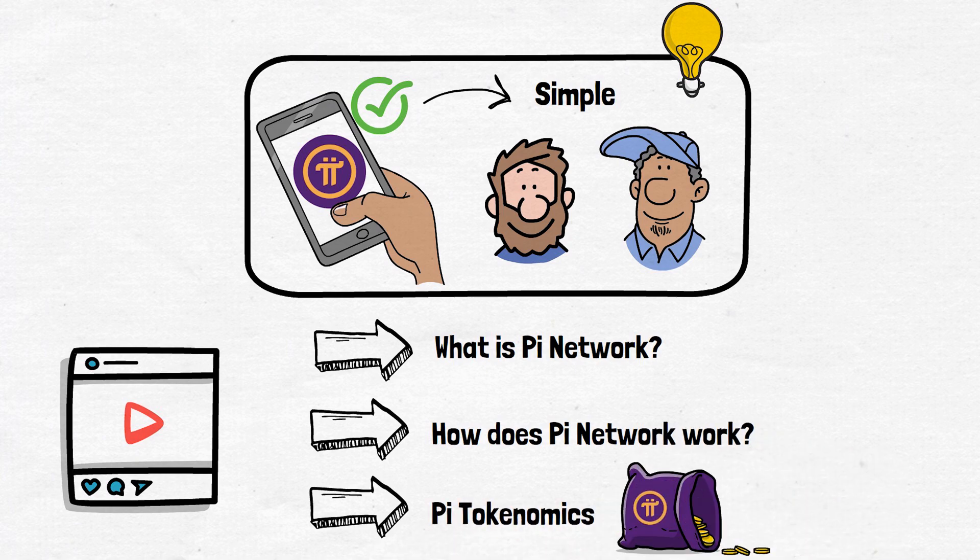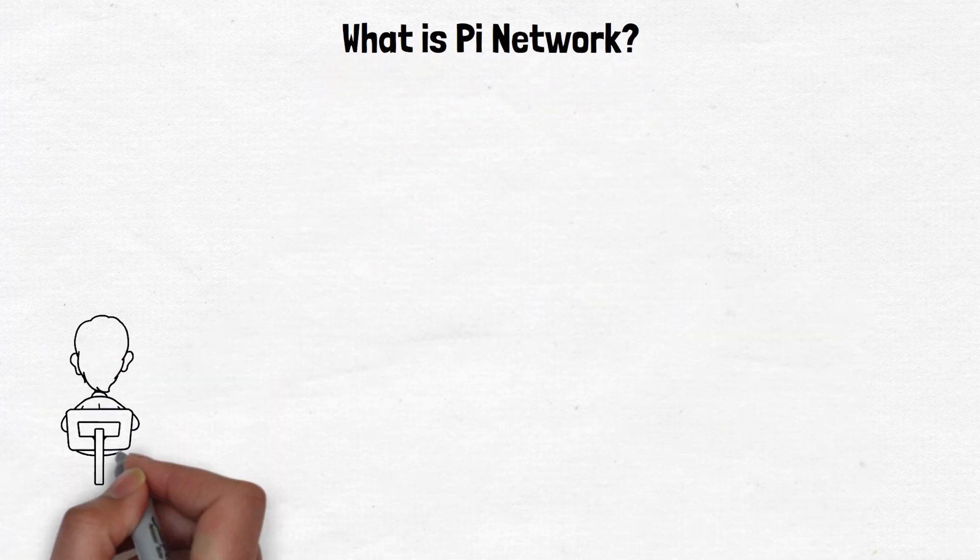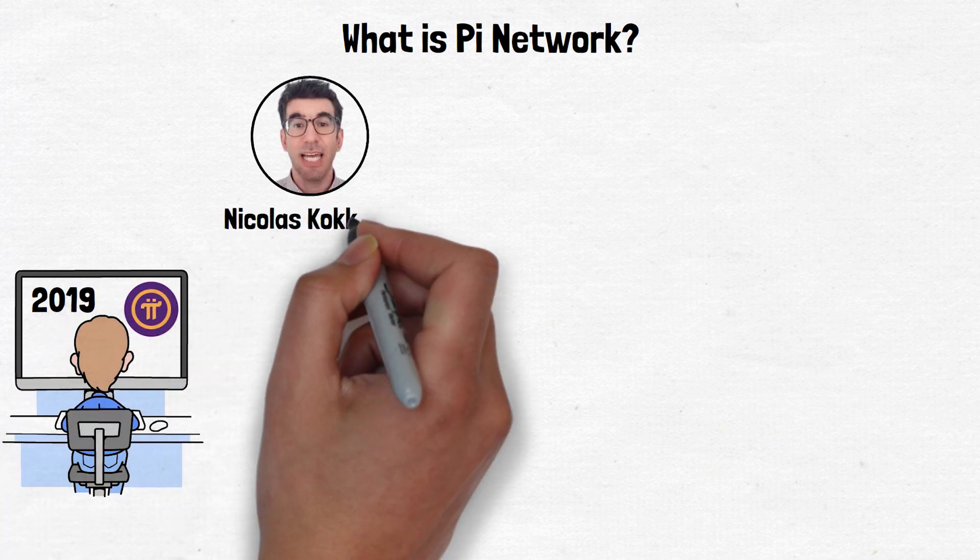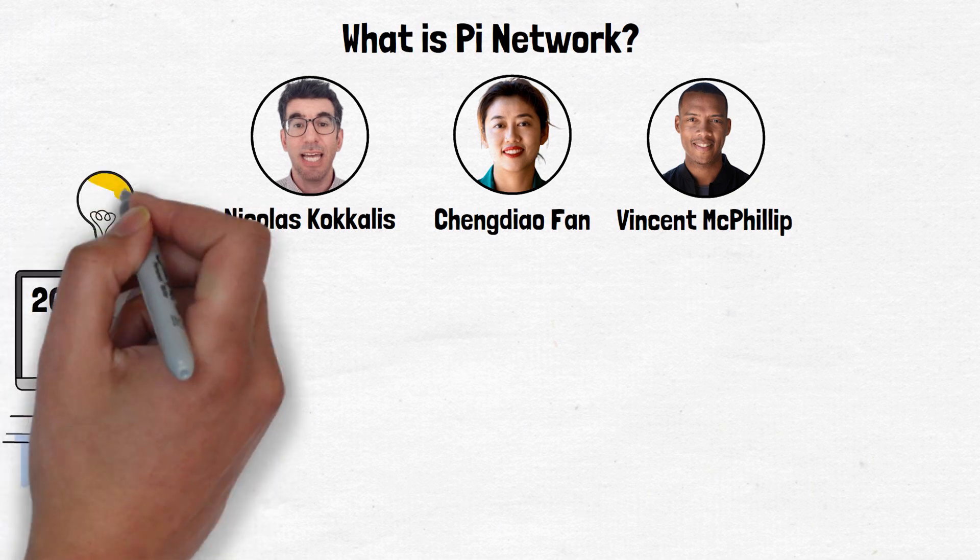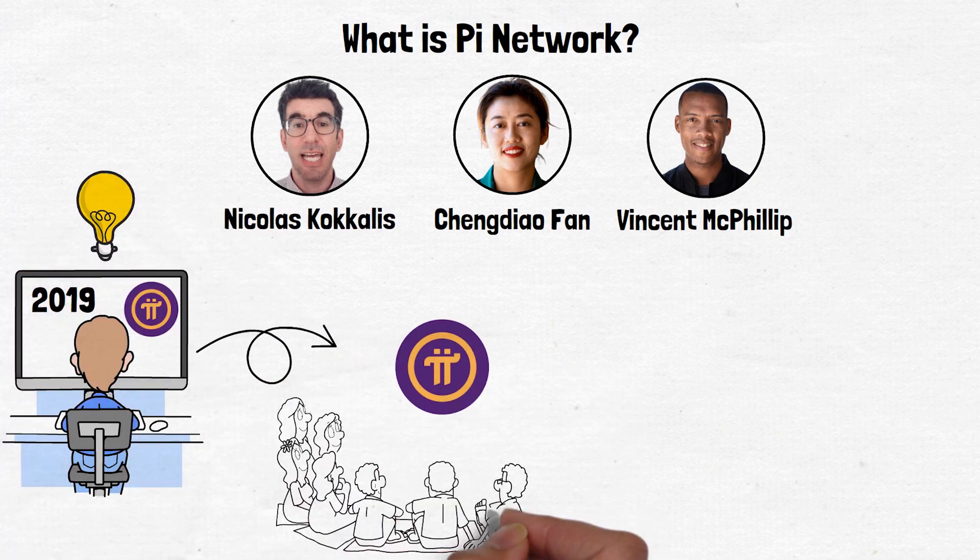Alright, let's start with the basics. What exactly is Pi Network? Pi Network is a cryptocurrency project founded in 2019 by Nicolas, Chengdiao, and Vincent, all Stanford graduates. The idea behind it was to make a cryptocurrency accessible to everyone, not just the tech savvy or wealthy.